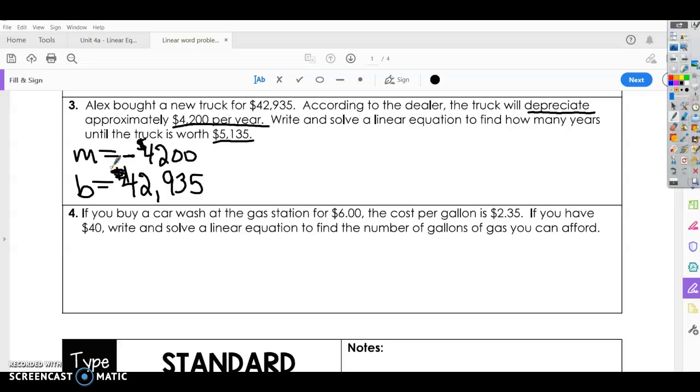The starting amount, the truck was worth $42,935, or at least you paid that much for the truck. So now we can write an equation. So y equals mx plus b, mx negative $4,200 in depreciation each year times the number of years, and then the starting amount was what the truck cost or what you paid for the truck, $42,935.